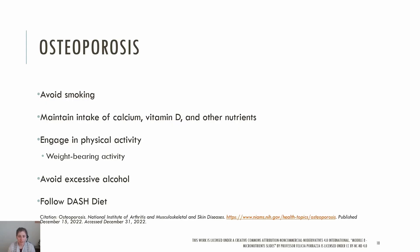Osteoporosis is a bone disease that develops when bone mineral density and bone mass decreases or when the structure and strength of bone changes, leading to decreased bone strength and increased risk of fractures. Osteoporosis is typically diagnosed with a DEXA scan to measure bone mineral density. The sites most prone to fracture are the hip and spine. Steps to prevent osteoporosis include avoiding smoking, maintaining a nutritious diet rich in calcium and vitamin D, engaging in weight-bearing physical activity, avoiding excessive intake of alcohol, and taking any medications as prescribed.